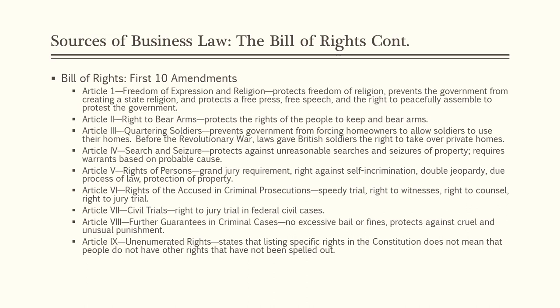The Ninth Amendment deals with unenumerated rights — it states that listing specific rights in the Constitution does not mean people do not have other rights that haven't been spelled out. This covers implied rights, and the right of privacy is often said to come in part from the Ninth Amendment. The Tenth Amendment covers reserved powers — rights not granted to the federal government are reserved to the states and the people. This mimics language in the Constitution's Article IV. This is the end of Chapter 1, Part 1.